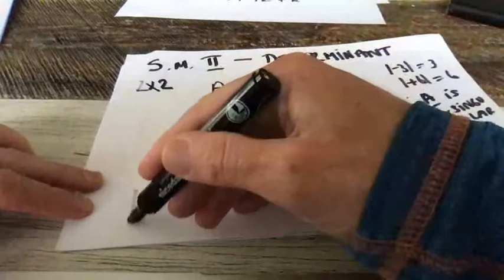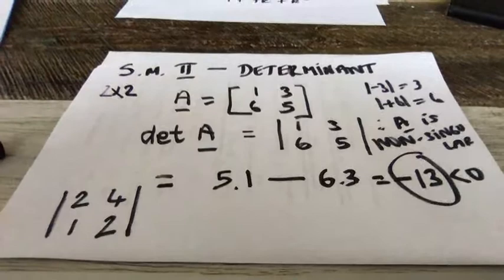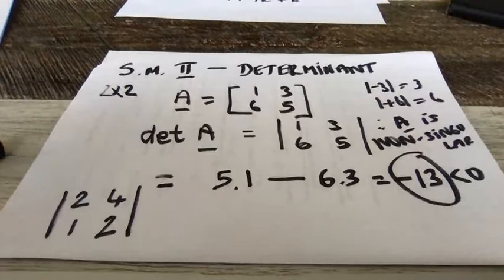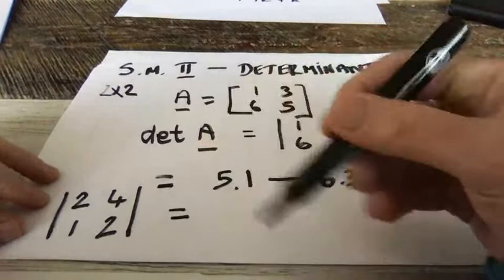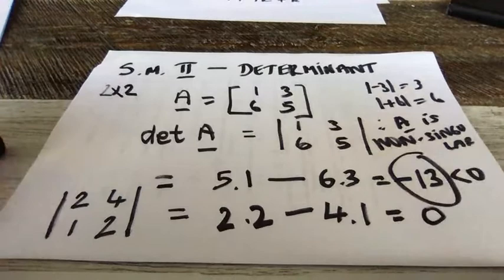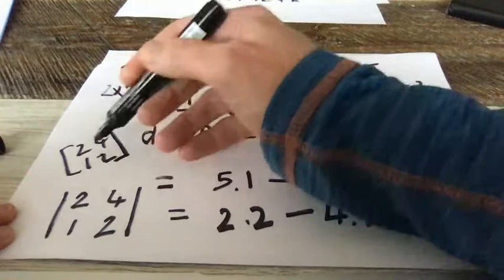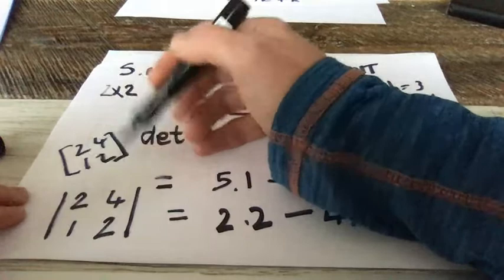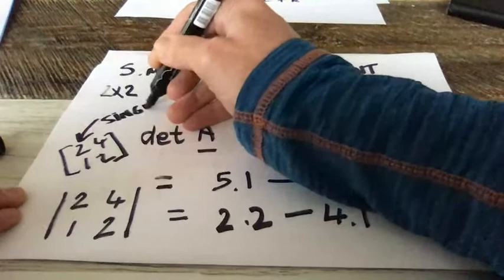Let's look at another example: the matrix 2, 4, 1, 2. When written between two straight lines, you know it represents a single number — you're converting the matrix into a number. The way you do it is: 2 times 2 is 4, minus 4 is zero. So the determinant is zero. Therefore this matrix — 2, 4, 1, 2 — is singular. That's very, actually amazingly, important. You'll be surprised at how often you encounter this as you go through your engineering studies.